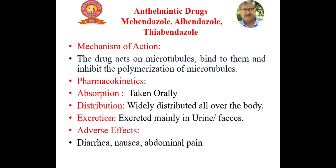Now to start with the drugs Mebendazole, Albendazole, and Thiabendazole — this group of anthelmintic drugs acts on microtubules of the worms present in the body. The drugs bind to them and inhibit the polymerization of microtubules of worms, so they kill the worms. These drugs are given orally, widely distributed all over the body, and excreted mainly in urine or faeces. Adverse effects are diarrhea, nausea, or abdominal pain.